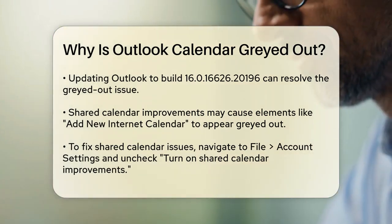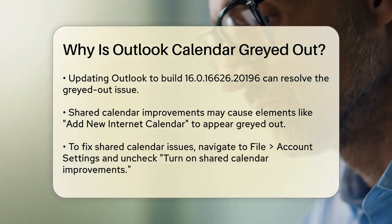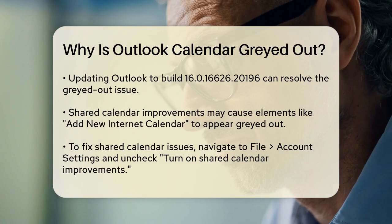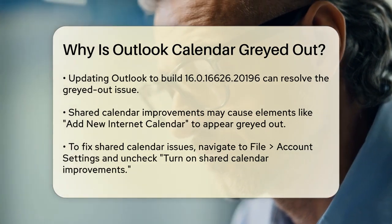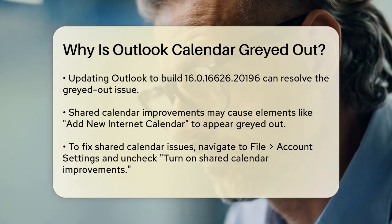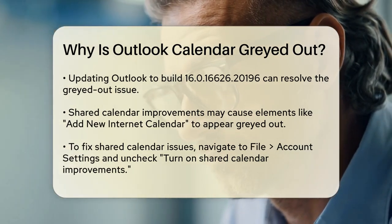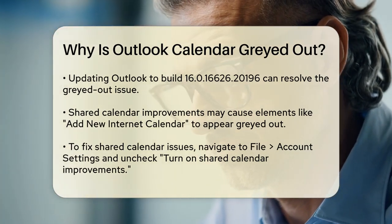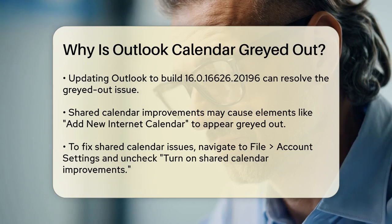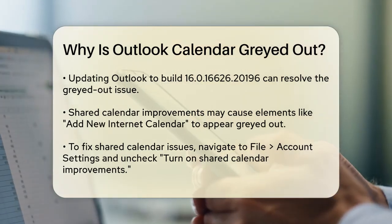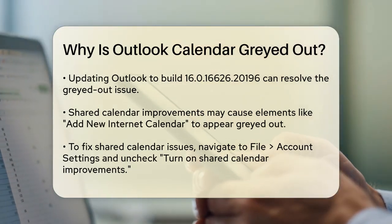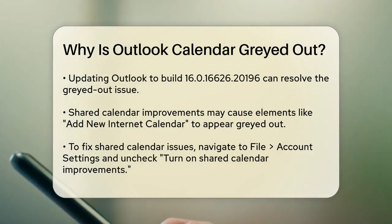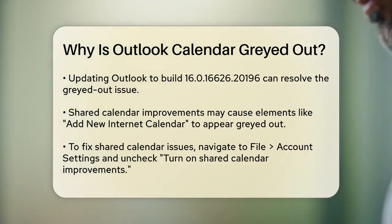To fix this, go to File, Account Settings, Account Settings, select your Microsoft Exchange account, choose Change, then More Settings, and finally unselect the checkbox next to Turn on Shared Calendar Improvements.